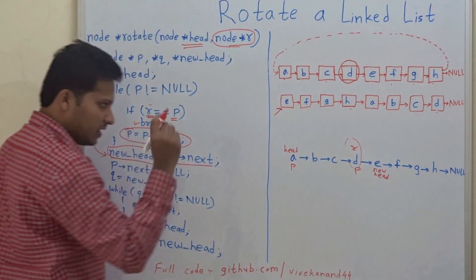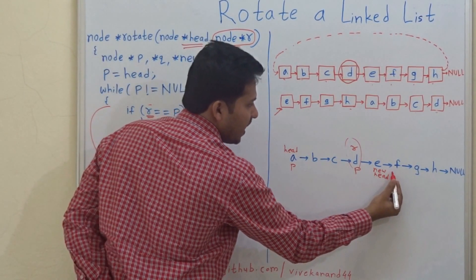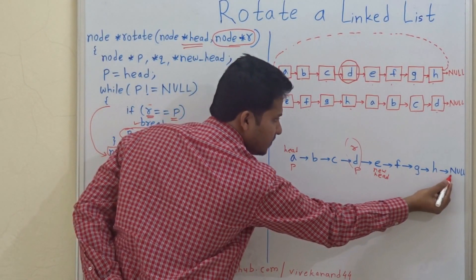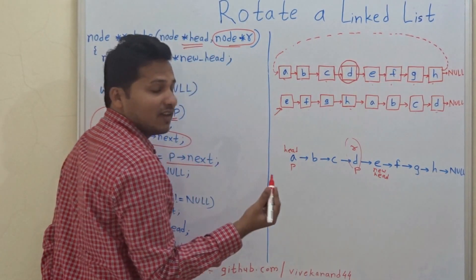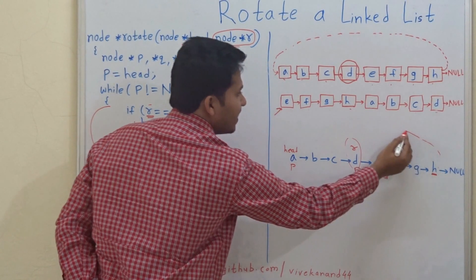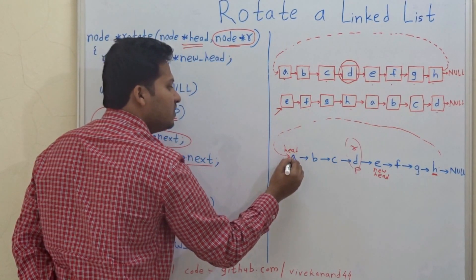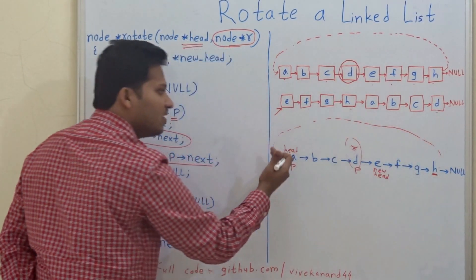Then there is one more condition which is necessary. We have to reach to the end of this linked list. Because when we reach the end node, we will connect the end node to the head of this linked list so that we can rotate it.